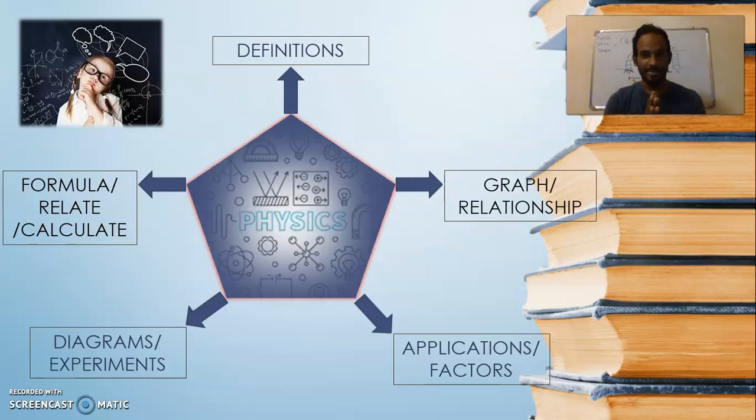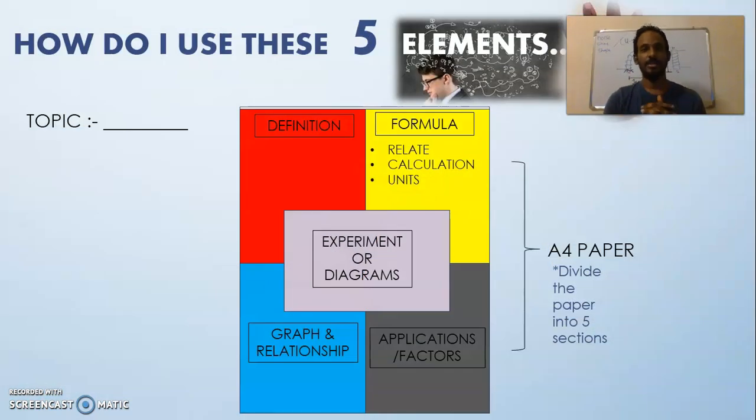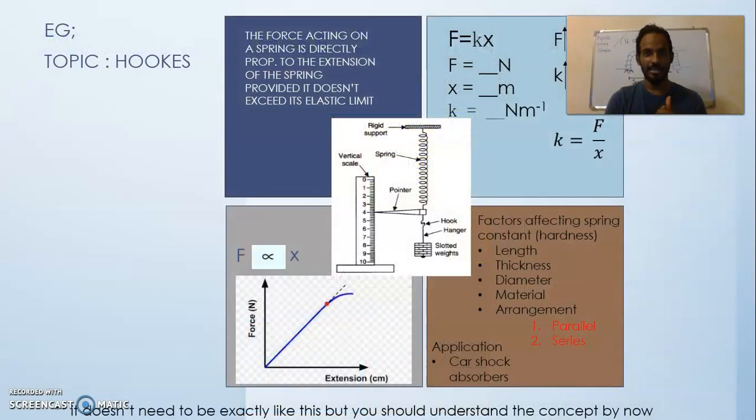I want to give you an example. Let's say, for example, get an A4 paper. How do you use these five elements? I want you to divide the paper into five sections. So basically you're going to have one column for your definition, as you can see, one column for your formula, one for the experiment and diagrams, another one for the graph and relationship, and another one for your application and factors. You can divide them in this manner and then the topic there.